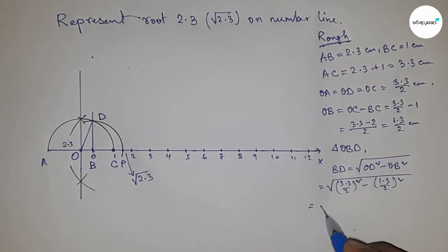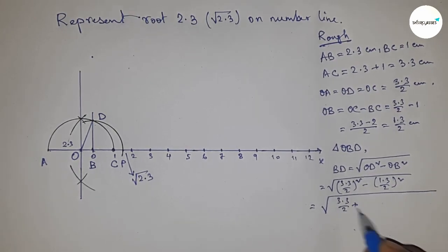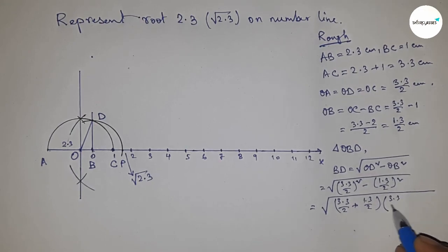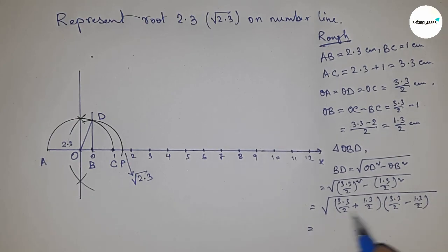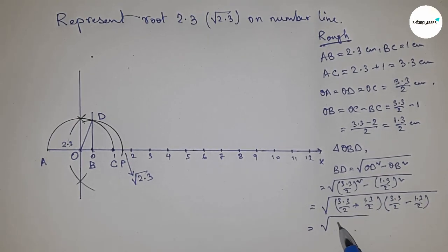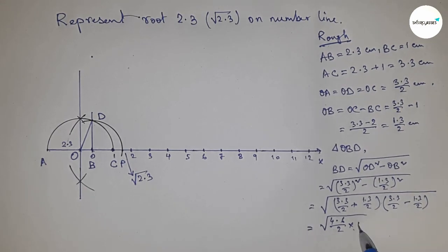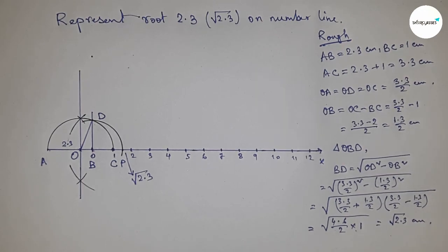Using the formula a squared minus b squared equals (a plus b)(a minus b), this becomes square root of (4.6/2) times (2/2), which simplifies to square root of 2.3 centimeters.